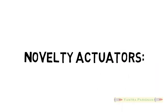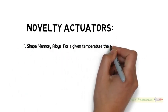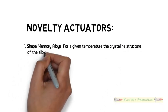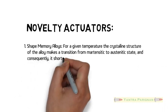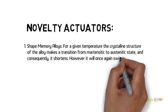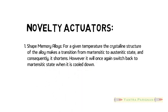Novelty actuators: Shape Memory Alloy Actuator. For a given temperature, the crystalline structure of the alloy makes a transition from martensitic to austenitic state, and consequently it shortens. However, it will once again switch back to martensitic state when it is cooled down.